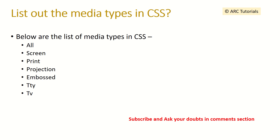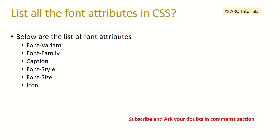Can you list out the media types in CSS? There are multiple media types in CSS, some of which are: all, screen, print, projection, embossed, TTY, and TV. These are the different media types available in CSS that we can use.